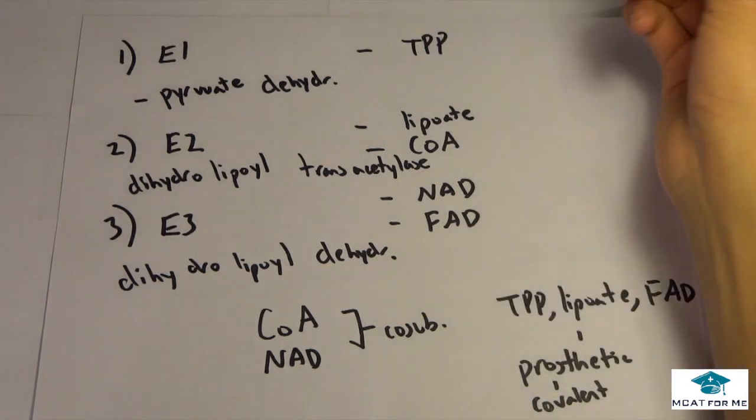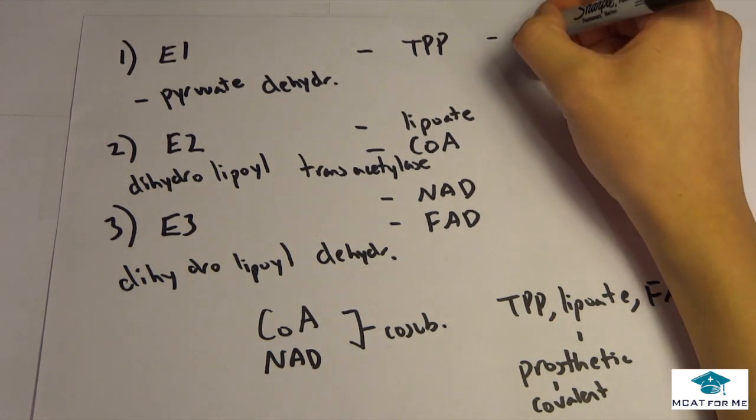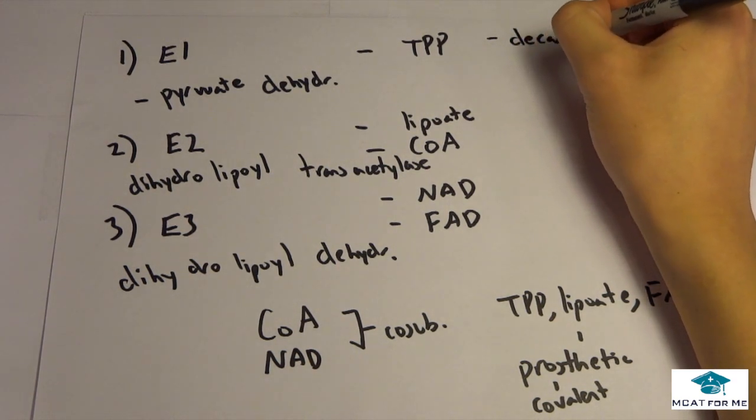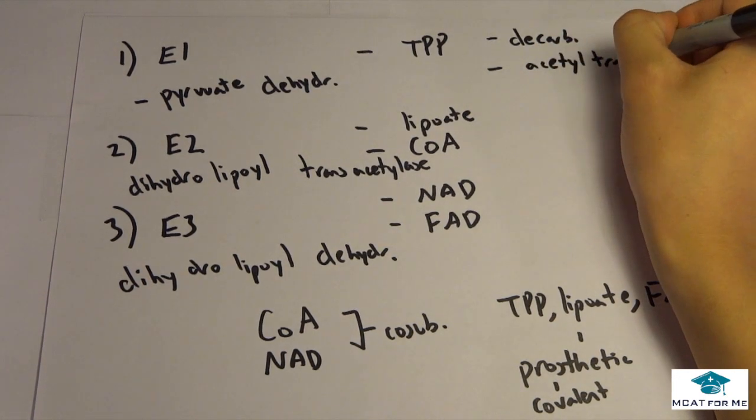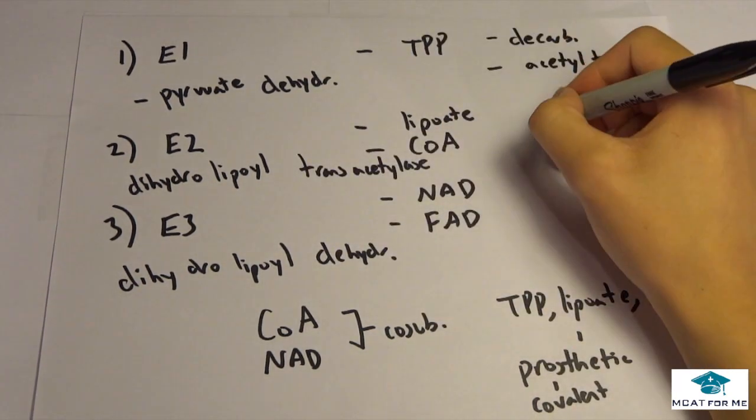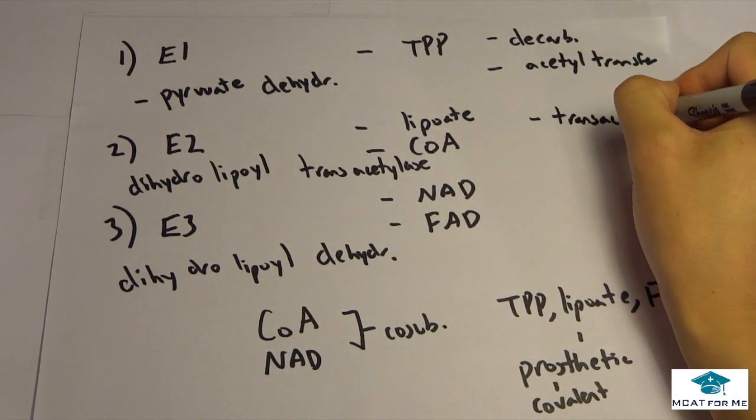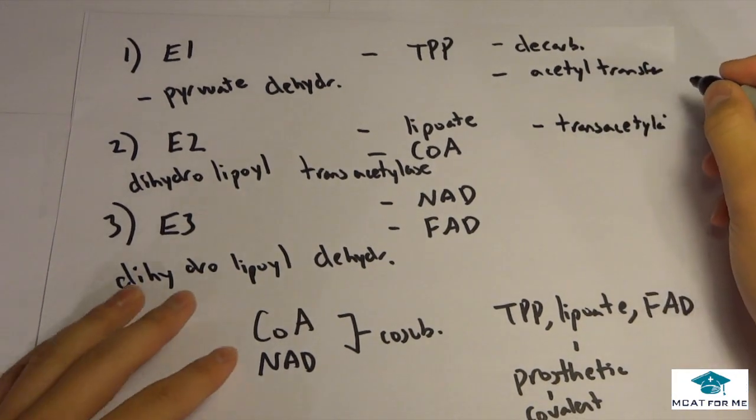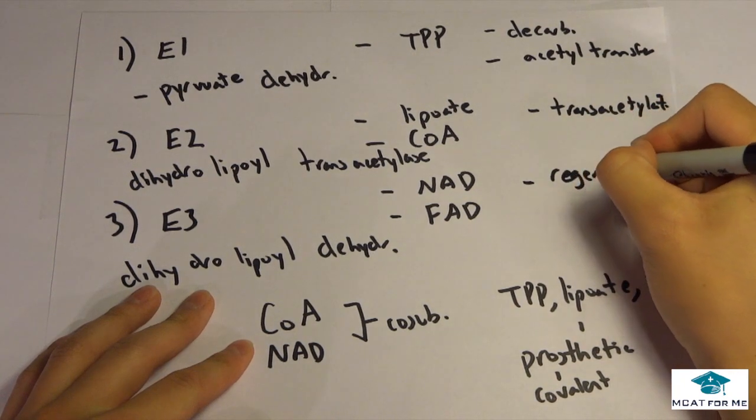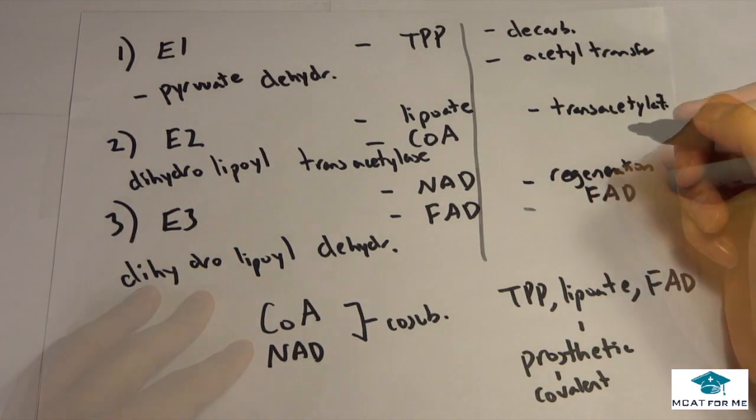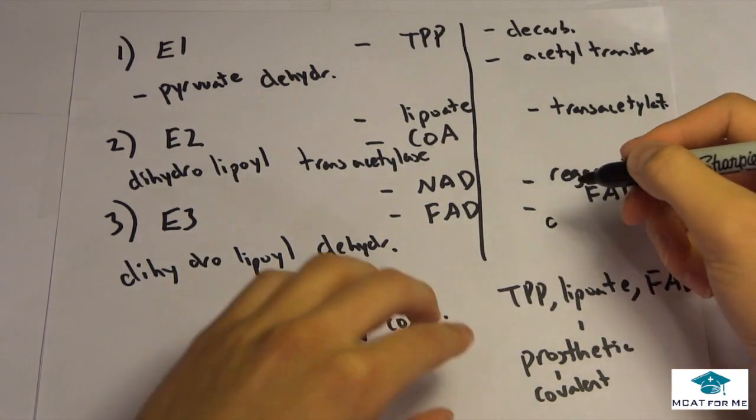So we'll see what the basic goals of E1, E2 and E3. E1 we'll see that we're doing a decarboxylation and also acetyl transfer. E2 if we see the transacetylase we should know that the goal will be transacetylation. And also for E3 we'll see that it's a regeneration of our FAD. We also want to regenerate dihydrolipoyl. So everything about E3 is just regeneration.